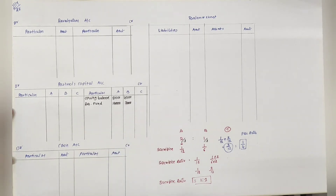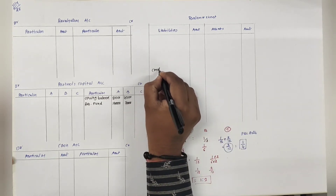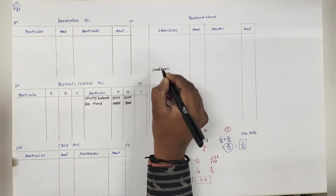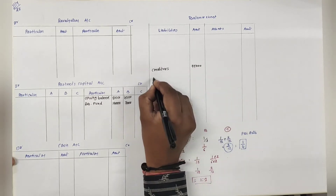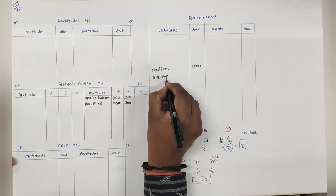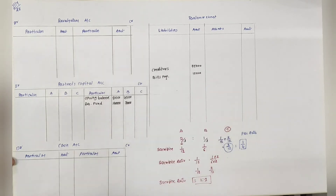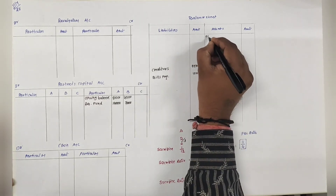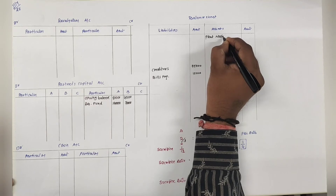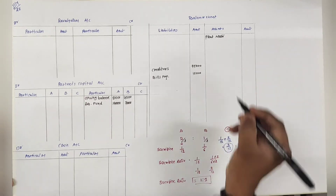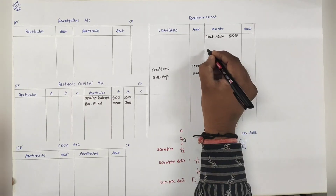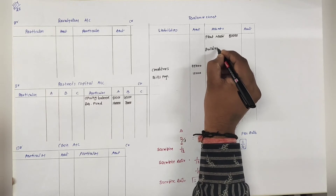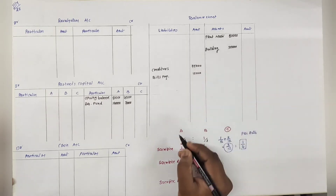Creditors - balance sheet में जाएगा, कहीं पर share नहीं होगा. Amount is 75,000. फिर आएगा bills payable, amount is 10,000. Asset side - plant and machinery, amount is 80,000 - adjustment है so नीचे लिखेंगे. Building 50,000 - adjustment है so नीचे लिखेंगे.